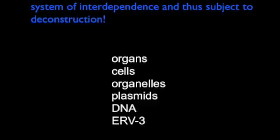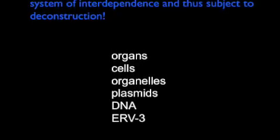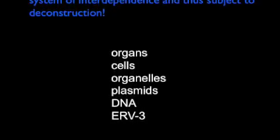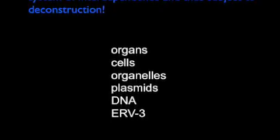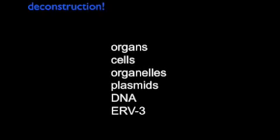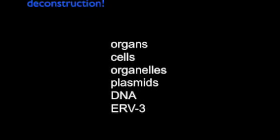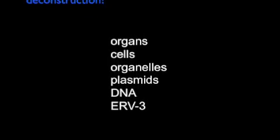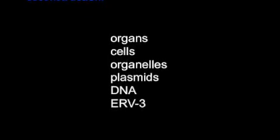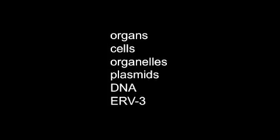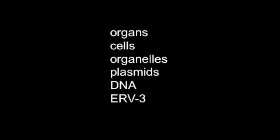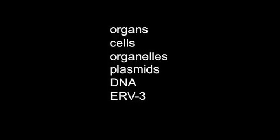The first axiom states things are made of other things. The second axiom states things come from other things. Implication 4 asserts that we can't rigorously differentiate between one species and another.